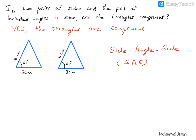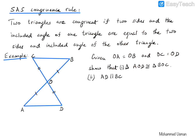The SAS congruence rule states that two triangles are congruent if two sides and the included angle — that means the angle between the two sides of one triangle — are equal to the two sides and the included angle of the other triangle. Let us do an example to apply this rule.